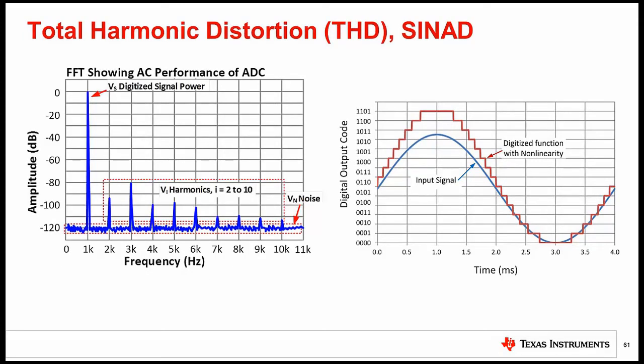This slide shows the frequency spectrum for the digitized sine wave at the right. The harmonics are a result of the distortion on the top half cycle of the waveform. Harmonic distortion will always occur at integer multiples of the fundamental frequency.